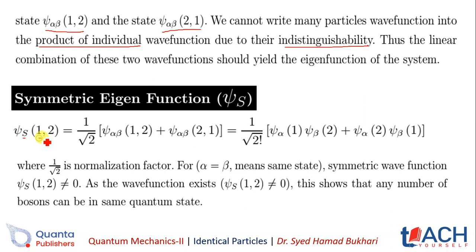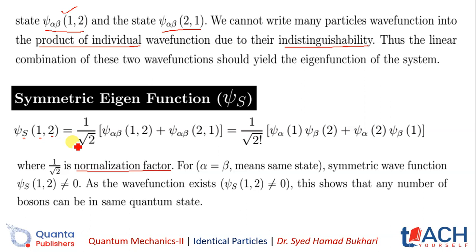The symmetric wave function is equal to 1 over root 2, which is basically the normalization factor — a normalization factor we introduced in Quantum Mechanics 1. So we have psi of alpha-beta (1,2), and for the symmetric wave function we add psi of alpha-beta (2,1) with a plus sign. This normalization factor has been applied, giving us the symmetric wave function.